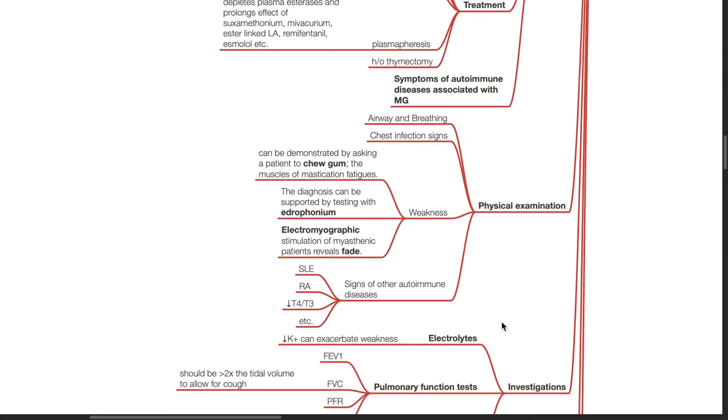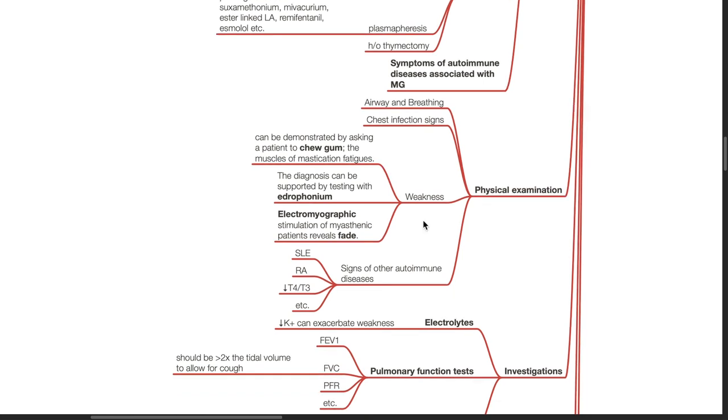Physical examination involves assessment of the airway, breathing, chest infection signs, muscle weakness which can be demonstrated by asking the patient to chew a gum and assess if the muscles of mastication fatigue. As mentioned previously, edrophonium can be used to diagnose myasthenia gravis.